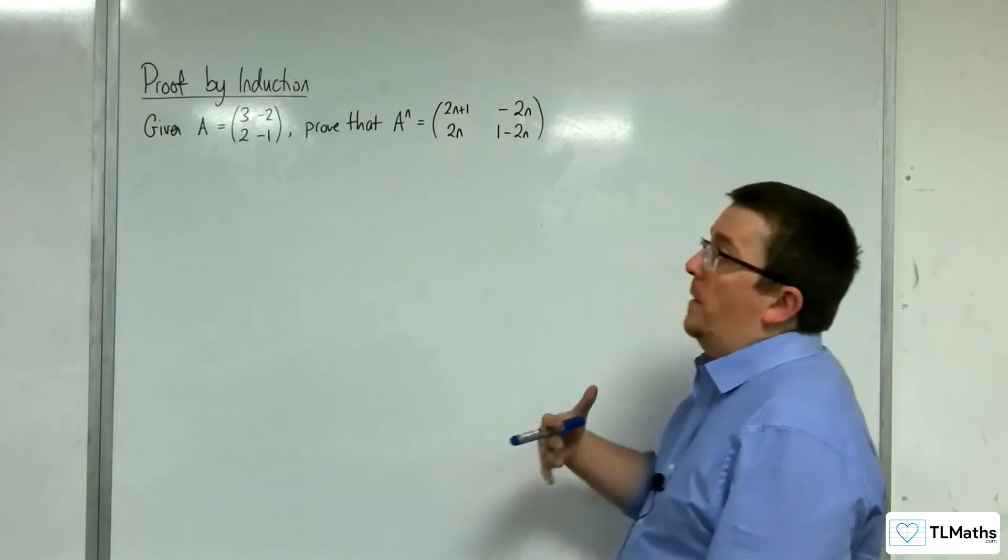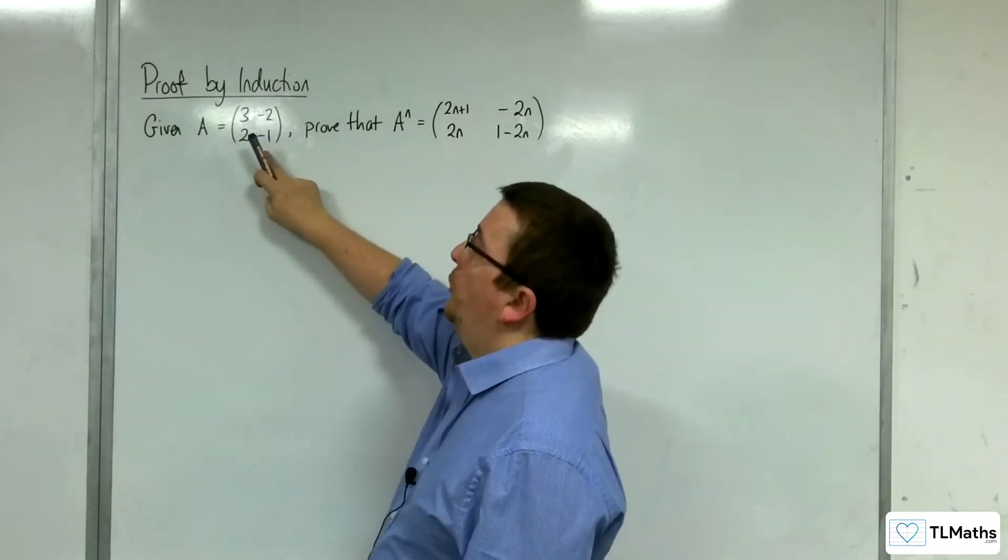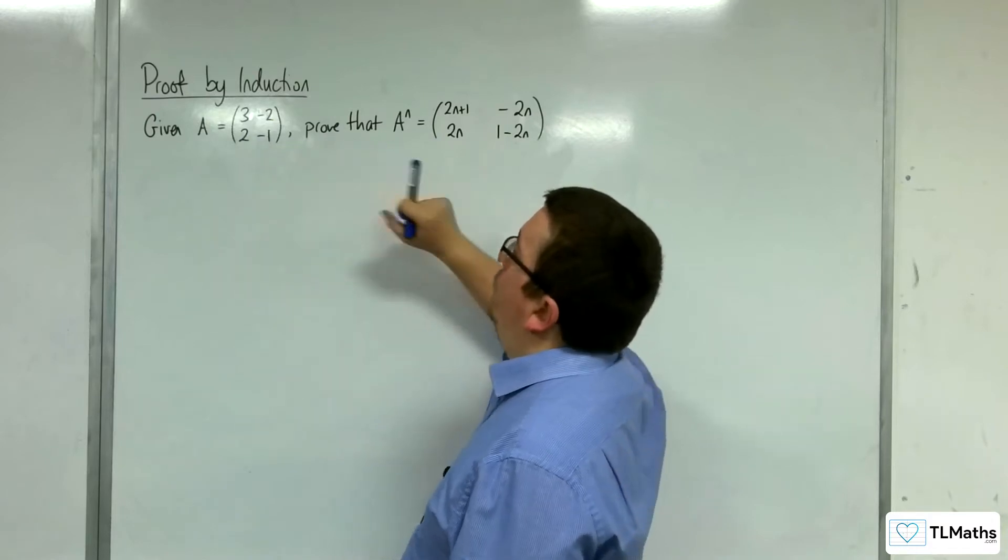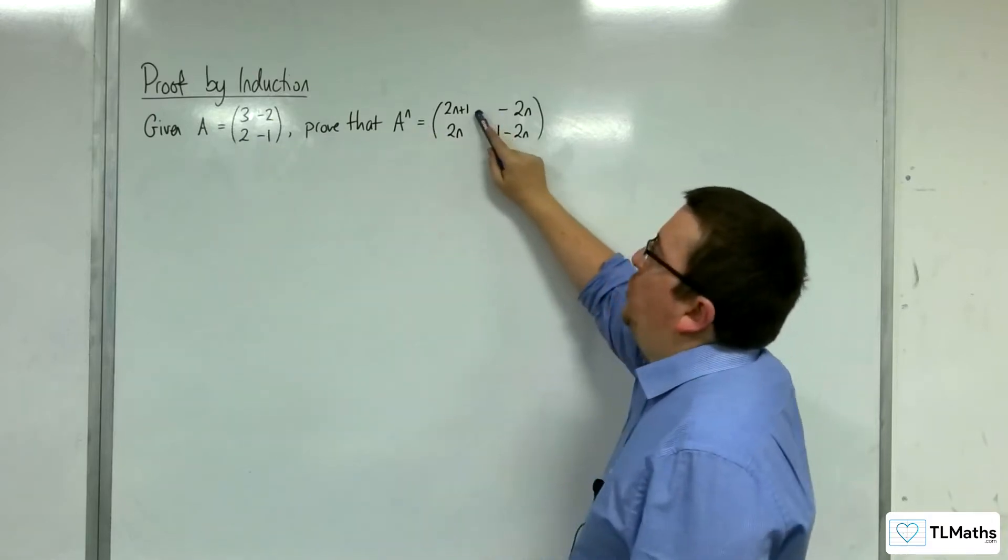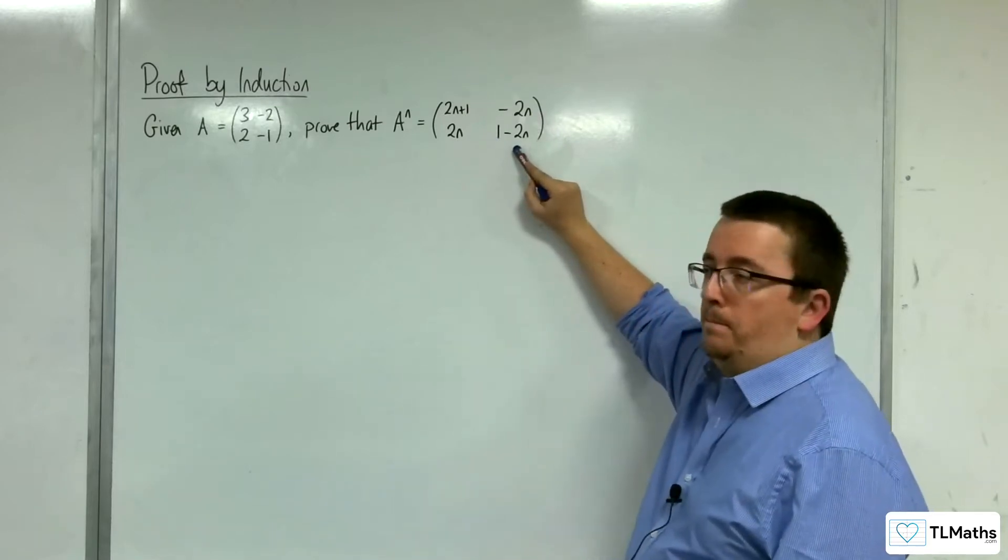So in this video, we're going to prove by induction that given that A is (3, -2; 2, -1), we're going to prove that A^n is (2n+1, -2n; 2n, 1-2n).